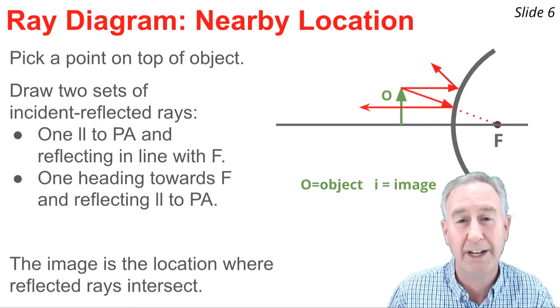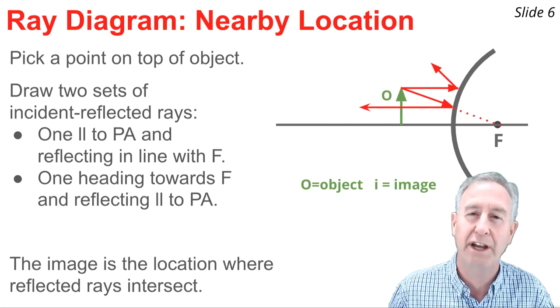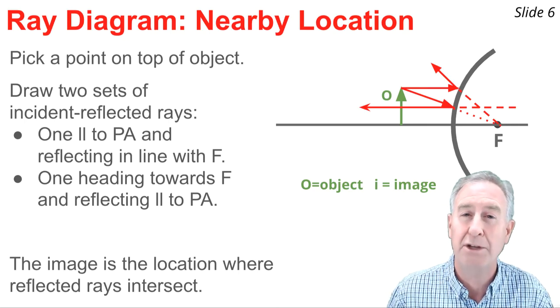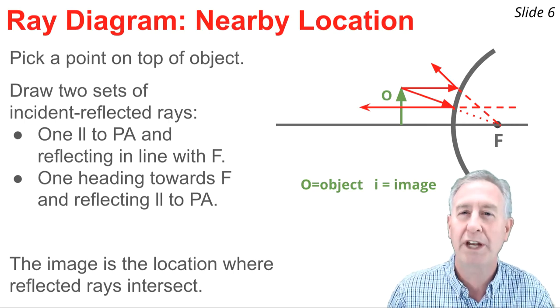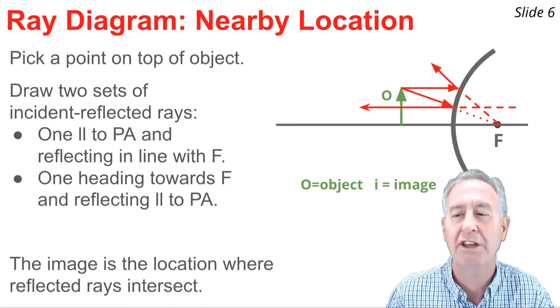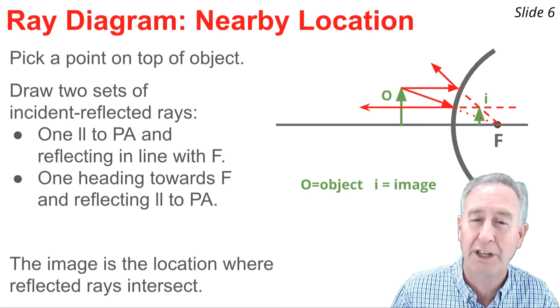Heading towards the focal point reflects parallel to the principal axis. Since the reflected rays are diverging, I have to trace them backwards behind the mirror to an intersection point in order to determine the image of the top of the object. When I do, I notice it's located above the principal axis, and I can draw in the complete image from the principal axis on up to this intersection point.